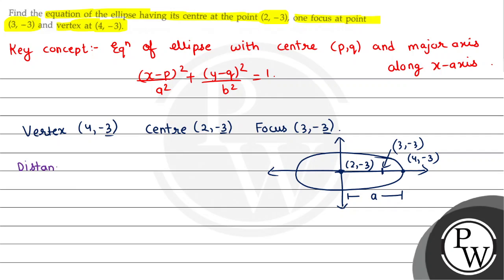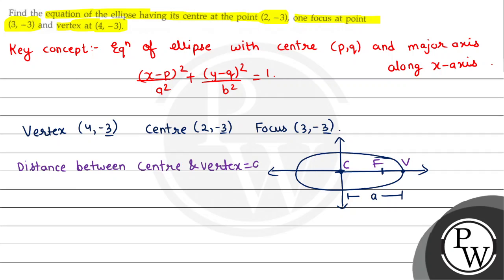The distance between center and vertex is equal to 'a'. So center is (2,-3) and vertex is (4,-3), so a = √[(2-4)² + (-3+3)²]. That gives us (-2)² = 4, so the value of 'a' is 2.